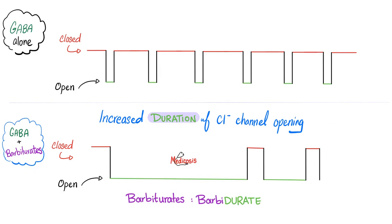How do barbiturates work? A slightly different mechanism - they increase the duration of each opening. So now chloride will have more time to enter into the neuron: hashtag inactivation. So benzodiazepines increase the frequency; barbiturates increase the duration. Just remember: barbiturates equal duration.